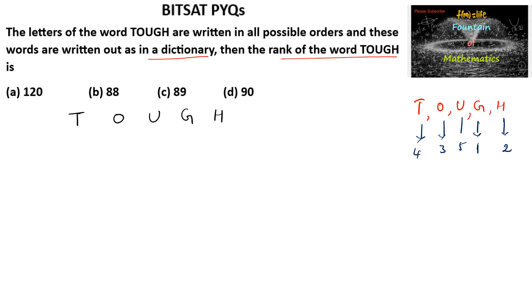The positions can be taken as: T is 4, O is 3, U is 5, G is 1, and H is 2. Now let us use the shortcut method to identify the rank.